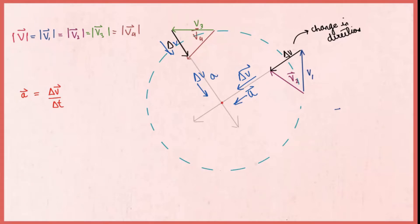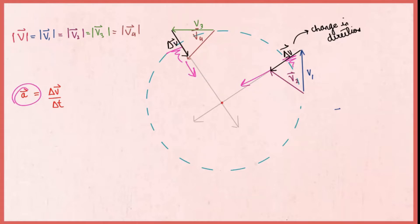And this acceleration is the centripetal acceleration. As acceleration is the rate of change of velocity and in the direction of delta v, the centripetal acceleration is also directed towards the center of the circle or the axis of rotation.